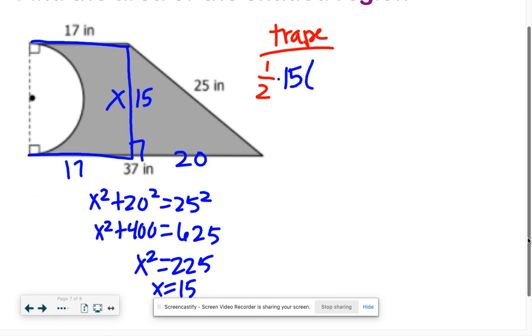Times our bases added together, so 17 plus 37. Half of 15 is 7.5, 17 plus 37 is 54. Multiply those out, we get 405.